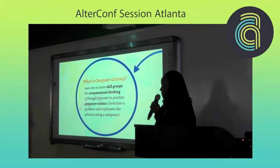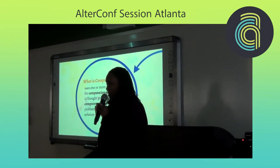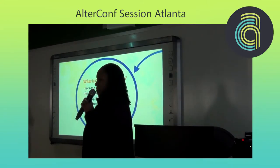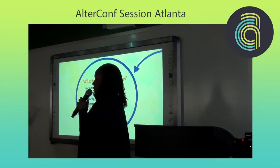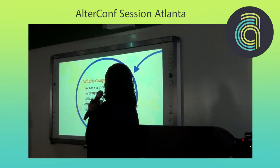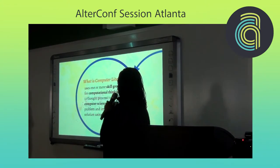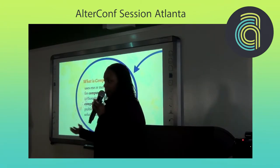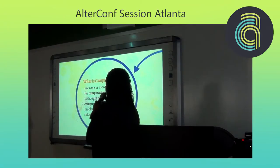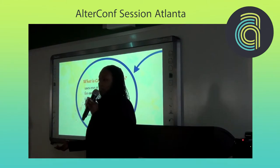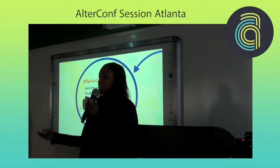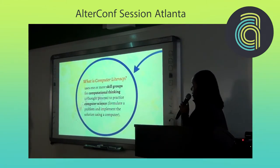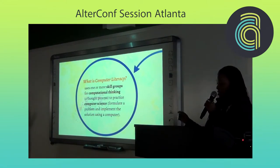So what is computer literacy? Kind of sounds like reading and writing computers, right? I've come up with a definition. My definition of computer literacy is when a child uses one or more skill groups for computational thinking, which is a thought process, to practice computer science, which is formulating a problem and then solving that problem with a computer. So in my definition, there are six skill groups.